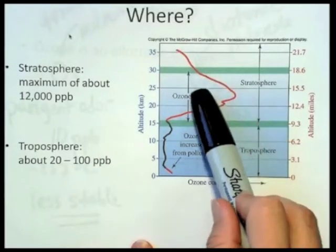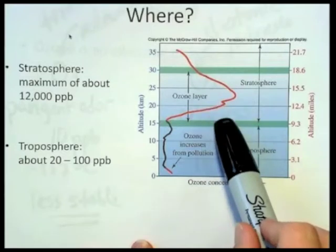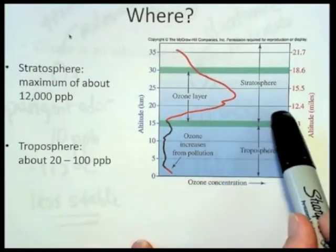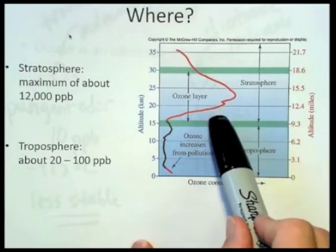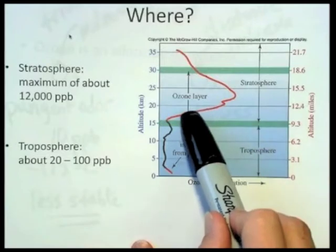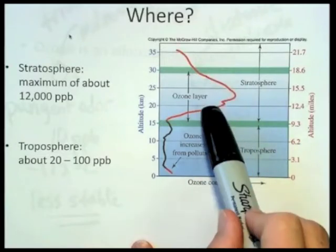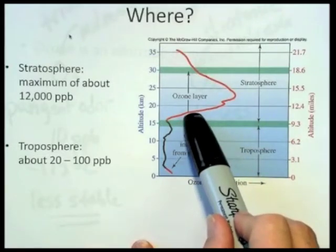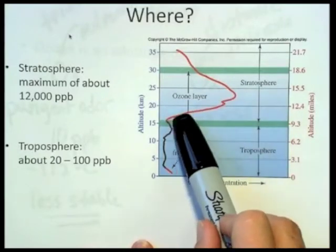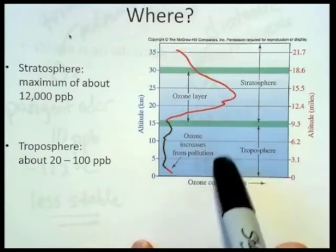Now, sometimes when people think of layer, they think of a pretty thin, high concentration layer. But really, this layer is about nine miles wide, and the concentration across those nine miles varies. At the maximum level up here, it's about 12,000 parts per billion, and down here, that would be about 100 parts per billion.